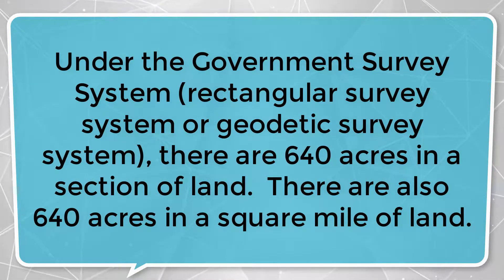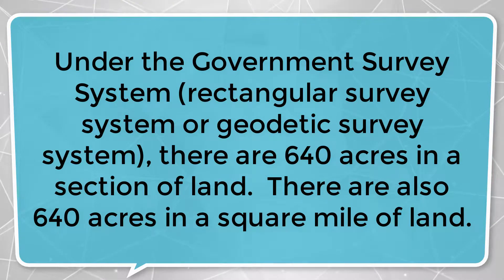Now we have what we refer to here at Past Masters as key facts. These are things that have been on the exam in the form of a question, and what you needed to know in order to get that question correct. So let's take a look at a key fact as it relates to an acre or acreage. Under the government survey system — also known as the rectangular survey system or geodetic survey system — there are 640 acres in a section of land, and there are also 640 acres in a square mile of land. When you are filling out legal documents, you have to get the legal description of the property, and the government survey system is one of the formats used to legally describe land.